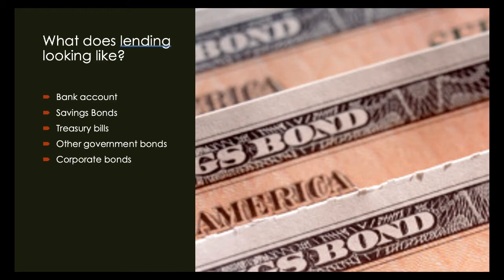There are other lending vehicles as well. A savings bond is a promise to pay you a certain amount once it reaches maturity — you buy it at a discount and allow the U.S. government to use that money in the meantime. The same is true with a government T-bill, or Treasury bill: you allow the U.S. government to borrow money from you, and later they pay you back the principal plus interest as your reward for your investment.